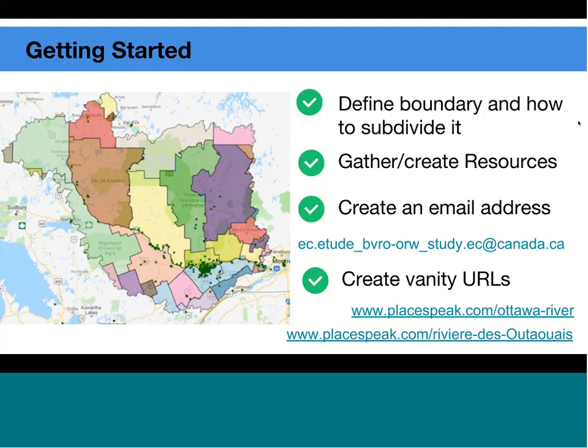We also had to work on developing our own resources such as different maps of the watershed, documents, and links to be used on the PlaceSpeak resources page. We put in a request to create a bilingual email address. With PlaceSpeak directly, one of the first things we had to do was agree on what is known as a vanity URL in both English and French — a shorter URL link that can be used in promotion.